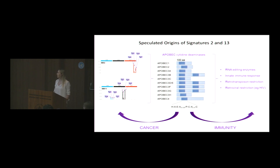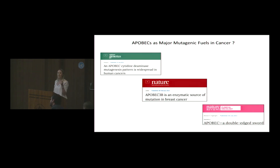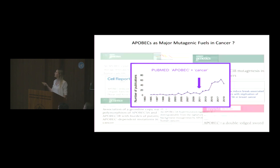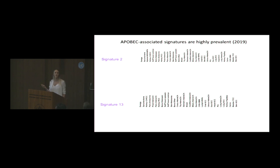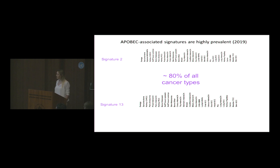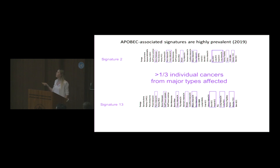This triggered a whole new field of studies linking APOBEC to mutations observed in cancer. Fast forward to 2019, with much more refined algorithms for detecting mutational signatures. Signatures 2 and 13 are found in almost 80 percent of all cancer types. They contribute to more than a third of individual cancers from some of the major types affected, including esophagus, lung, breast, head and neck, bladder, cervix, and many others.